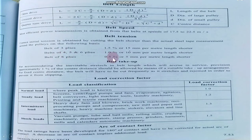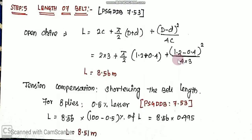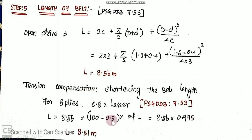The belt undergoes a shortening process. The length is reduced by 0.5 percentage. Multiplying 8.56 by 0.995, the value is approximately 8.51 meters. So the final length of belt is 8.51 meters. The shortening process is now completed.